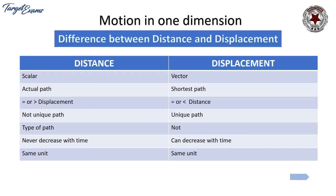Distance tells us about the type of path followed, but displacement does not tell us the type of path since we don't know the route taken from start to finish. Distance never decreases with time and is always positive; displacement can decrease with time and can be both positive and negative. Both distance and displacement have the same unit: meter.